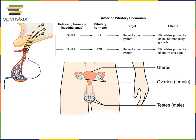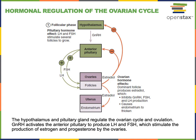The name follicle-stimulating hormone comes from the fact that FSH stimulates the growth of ovarian follicles. The ovarian follicles are support cells surrounding the immature egg cell. As the ovarian follicles grow and stimulate the maturation of the egg cell, they produce increasing levels of the estrogen known as estradiol, which is just a specific form of estrogen.